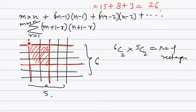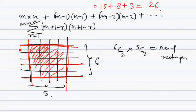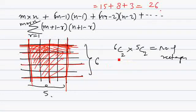For example, choose the two extreme lines on one side and two extreme lines on the other side — you get the biggest rectangle on the grid. Or choose any two lines horizontally and two lines vertically to get a specific rectangle. So every way of choosing two horizontal lines and two vertical lines gives us a rectangle. The total number of rectangles is 6C2 × 5C2.